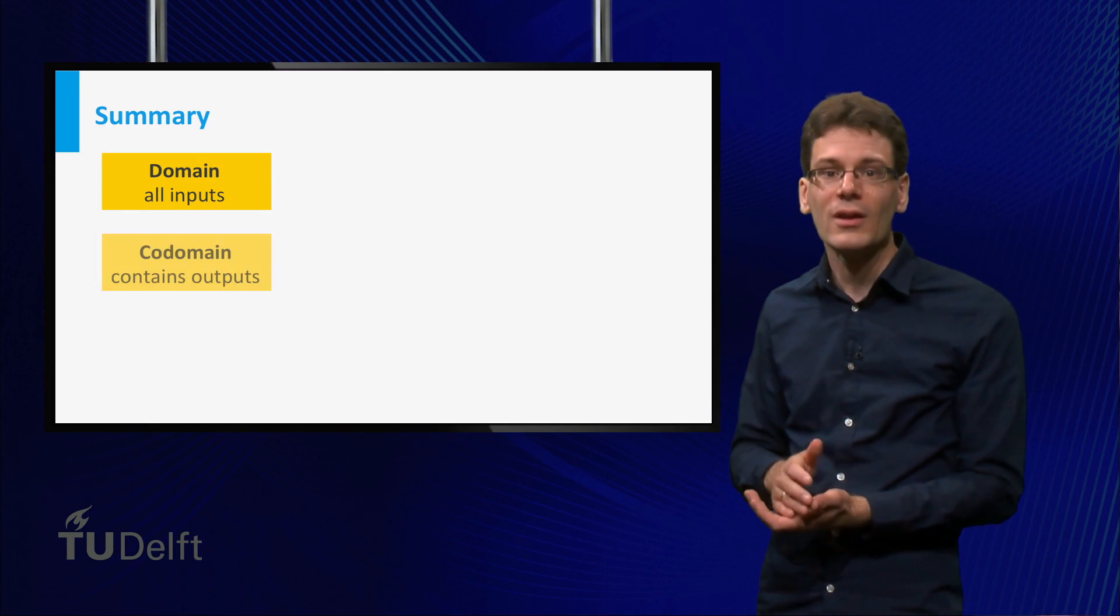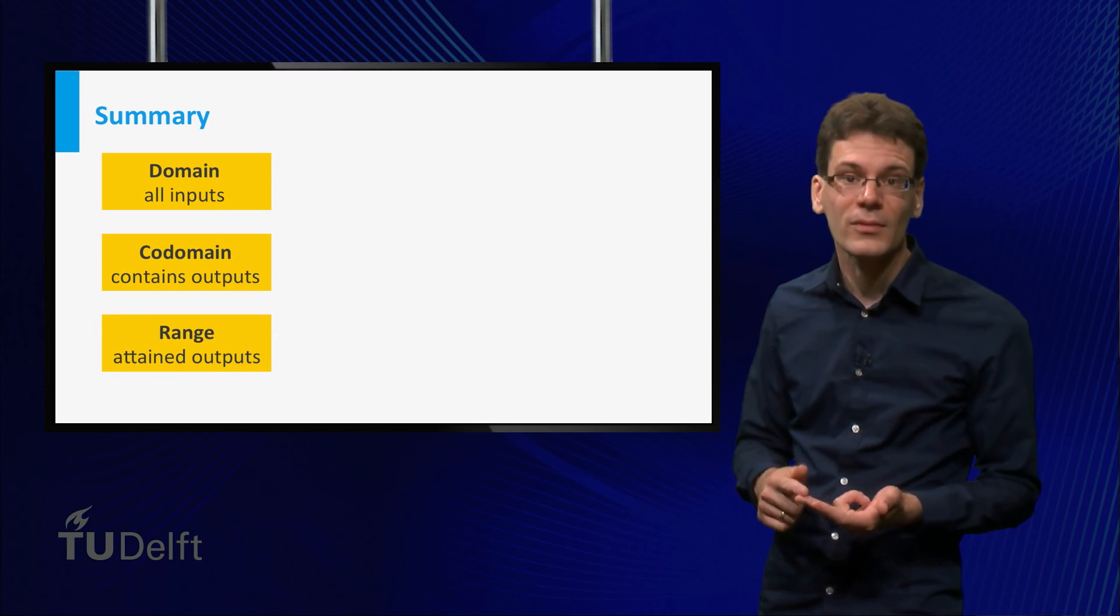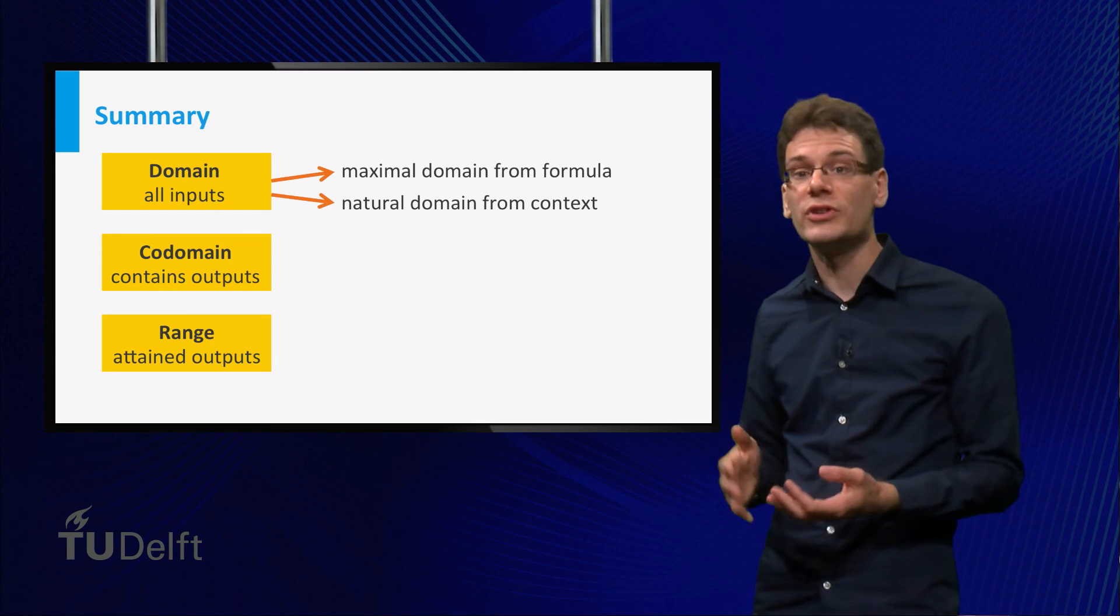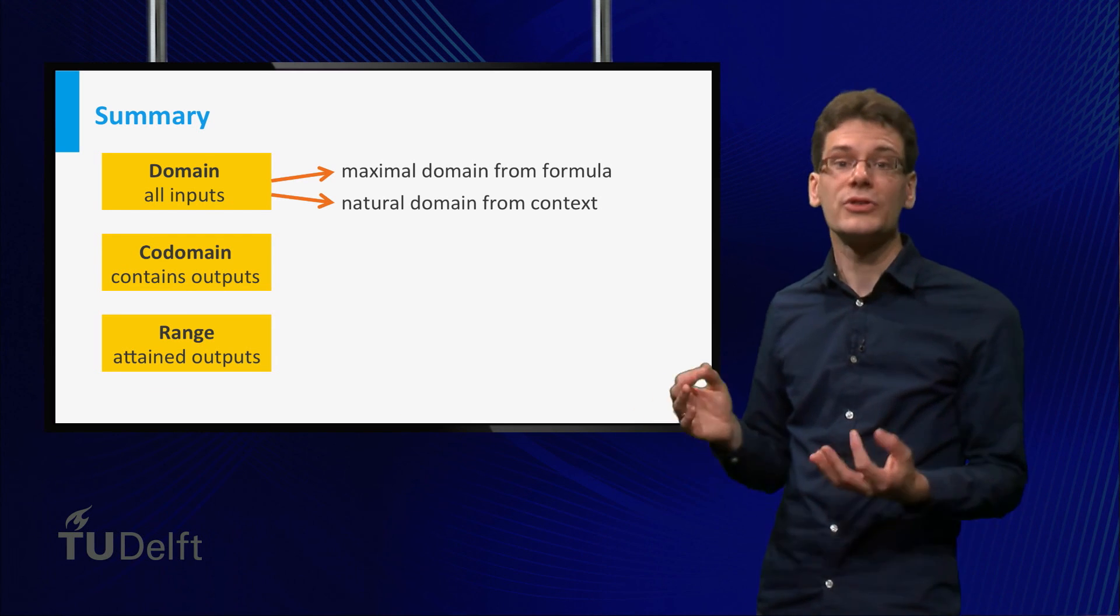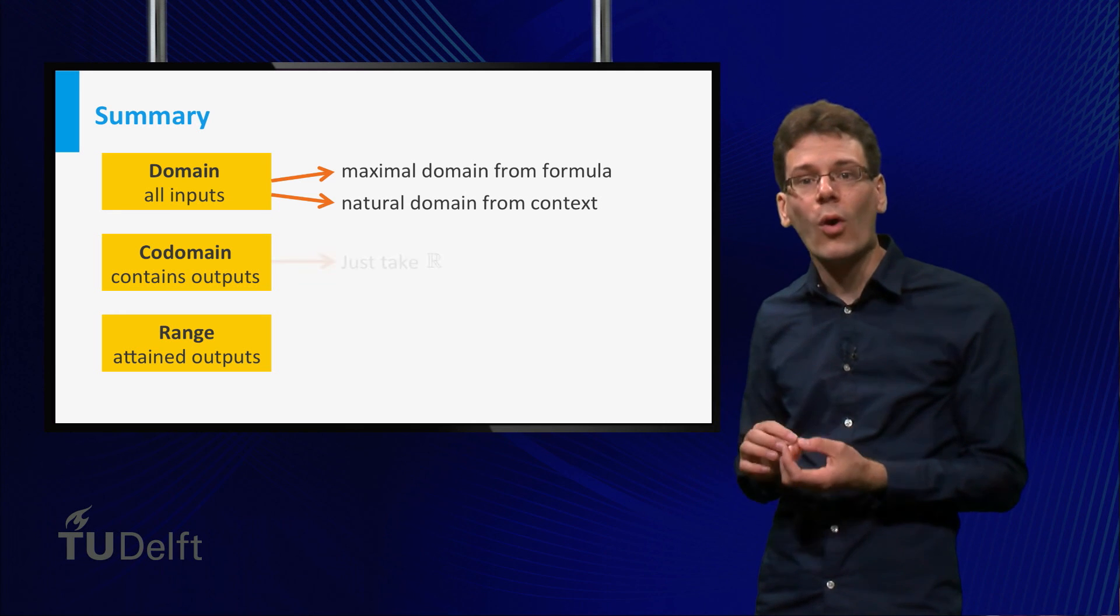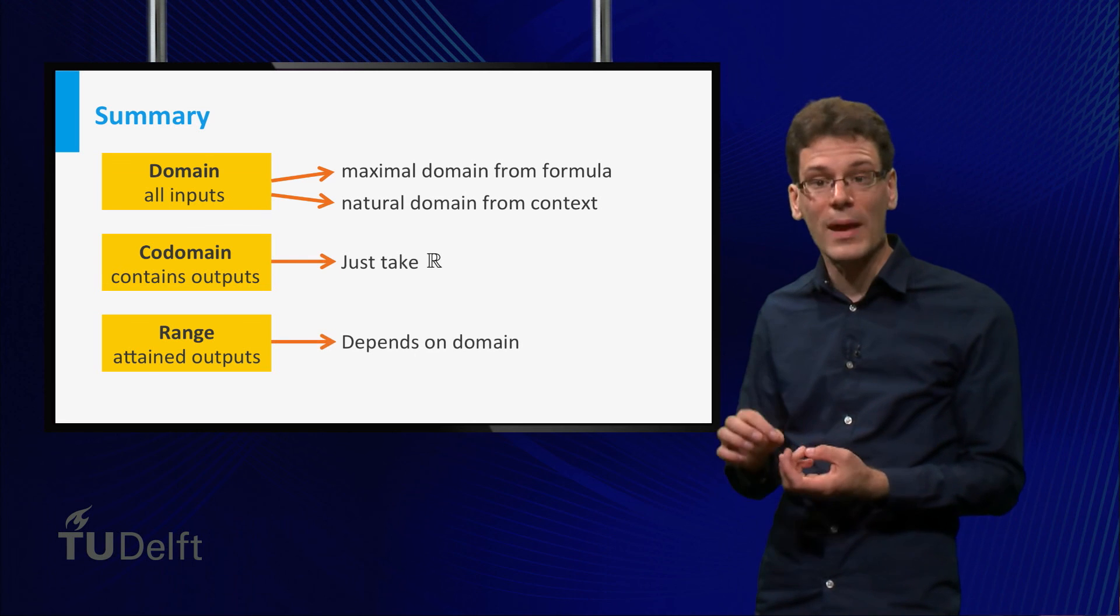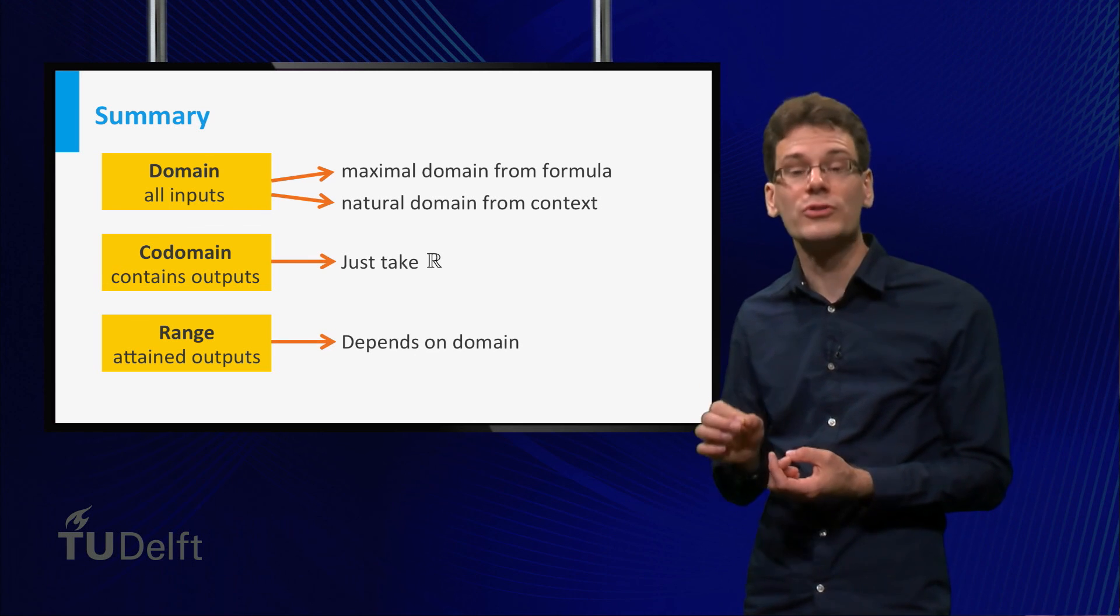To summarize, we considered domain, codomain, and range. If we do not specify the domain of a function, we just take it to be maximal. Sometimes the context makes it more natural to restrict the domain. We will always take the codomain equal to ℝ. And finally, remember that the range depends on the chosen domain.